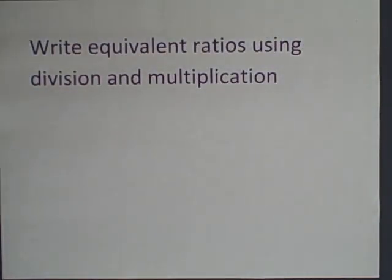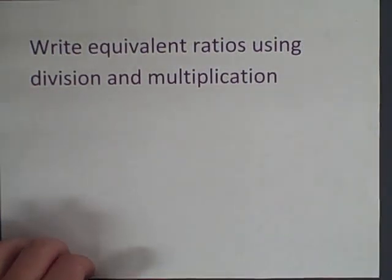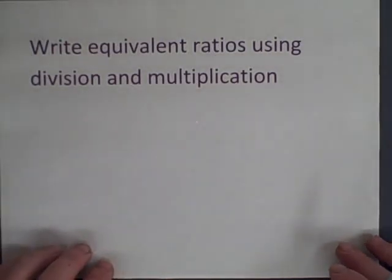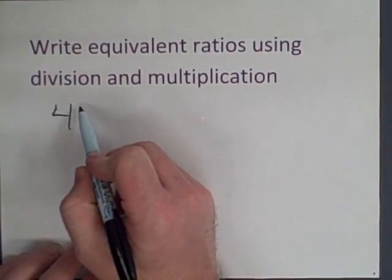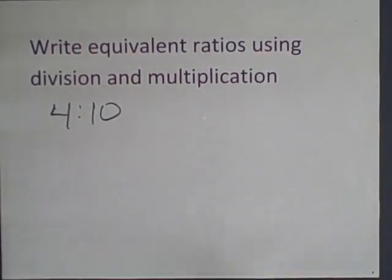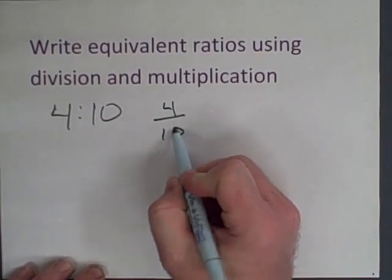Alright let's go ahead and look at how you write equivalent ratios using division or multiplication. For example, if I give you the ratio say four to ten, that's a ratio four to ten.